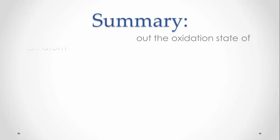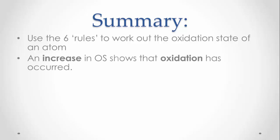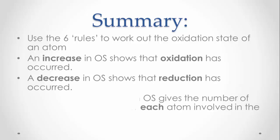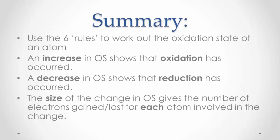Let's summarise what we have learnt. You should be able to work out the oxidation state of an atom — remember this will take practice. An increase in oxidation state shows that oxidation has occurred; a decrease shows that reduction has occurred. The size of the change in oxidation state gives the number of electrons gained or lost for each atom involved. Make sure you practise these ideas in your classwork and homework exercises so that you become competent in using oxidation states in redox chemistry.